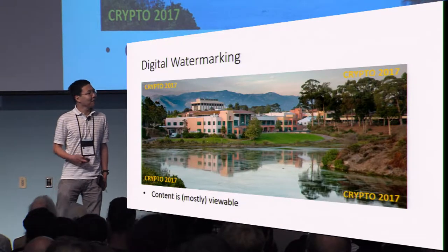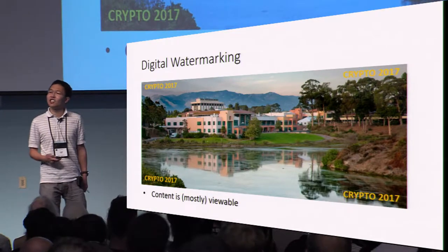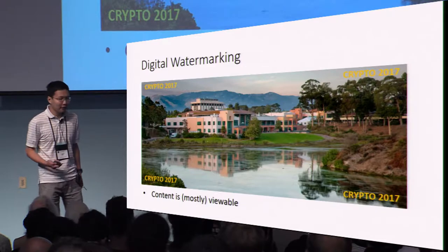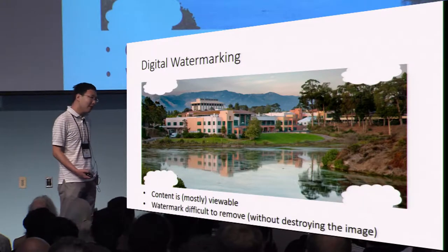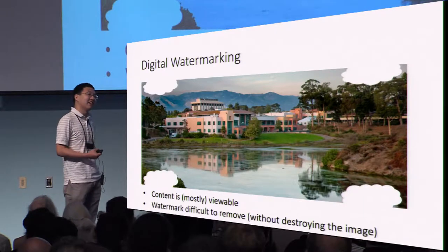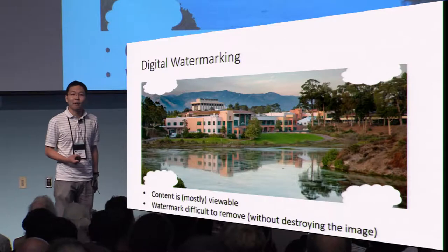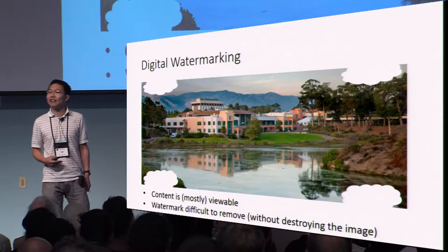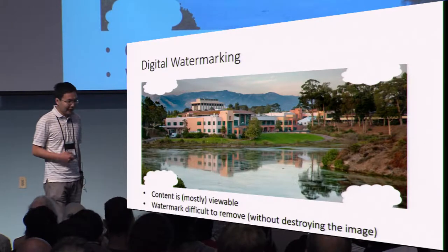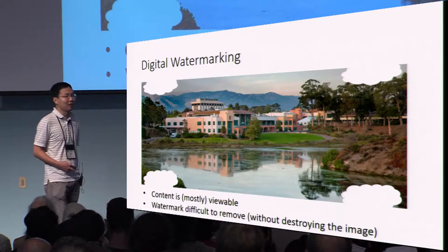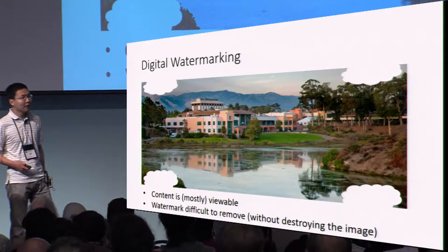First, after the watermark has been embedded inside an image, the content should still be mostly visible. However, an adversary that then tries to remove the watermark might necessarily destroy the image in order to remove the watermark, and it should visually alter the appearance of that image.